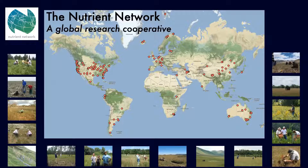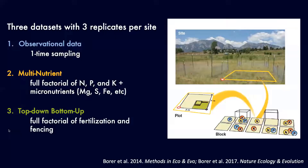At each site, we're collecting observational data — just going out and documenting what plants are there and various site characteristics. At most sites, we're also collecting long-term experimental data. In one experiment, we're adding nitrogen, phosphorus, and potassium with micronutrients in all possible combinations. In the other, we put up fences to keep out medium and large-sized herbivores, either adding or not adding all the elements inside the fences. We've been doing this work around the world for about 15 years.